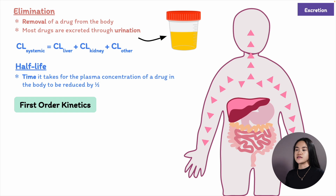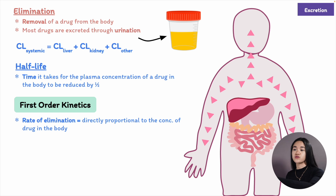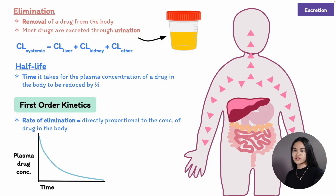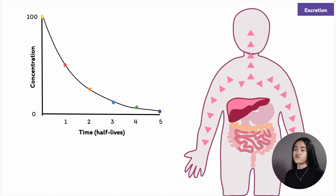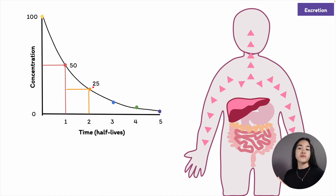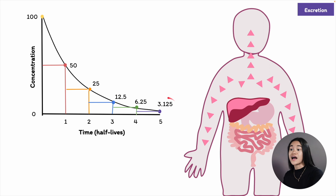In first-order kinetics, the amount of drug eliminated over time is directly proportional to the drug concentration in the body. The amount eliminated per time period differs, but the fraction is constant. Most drugs are eliminated by first-order kinetics, producing an exponential curve. At time zero we have 100% concentration; after one half-life it's 50%; after two half-lives, 25%; after three half-lives, 12.5%. At approximately five half-lives, 97% of the drug has been eliminated from the body.